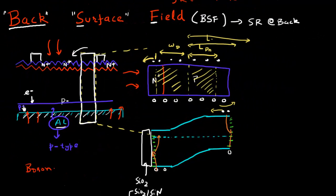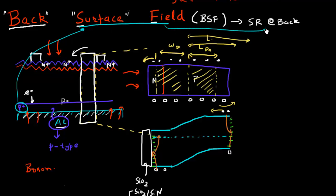In summary, the presence of this P+ layer at the back creates this surface field, and that surface field repels the minority carriers away from the back surface, helping to reduce the surface recombination towards the back surface. Hopefully you're able to understand this back surface field, and whenever you see the term BSF, you'll understand what's happening.